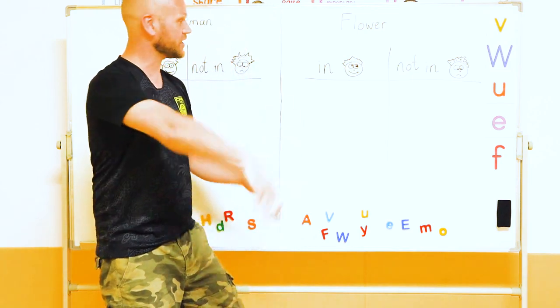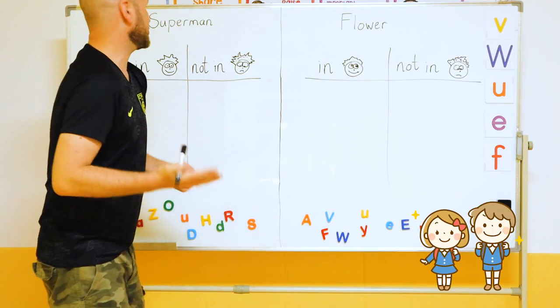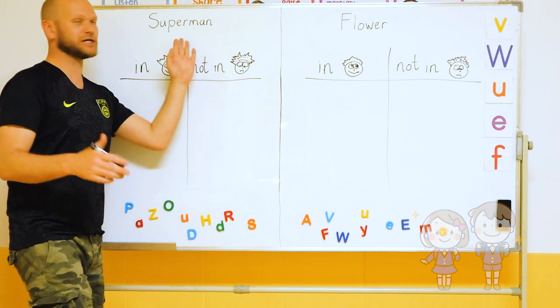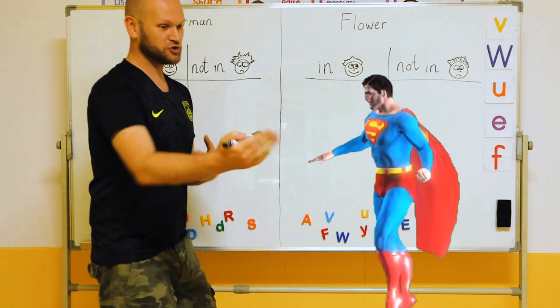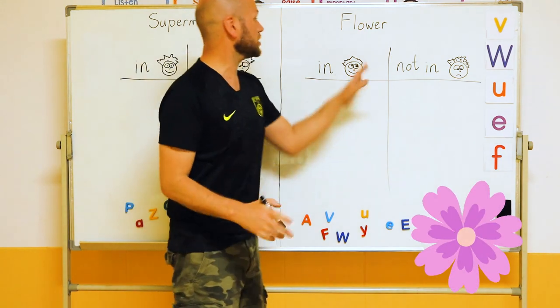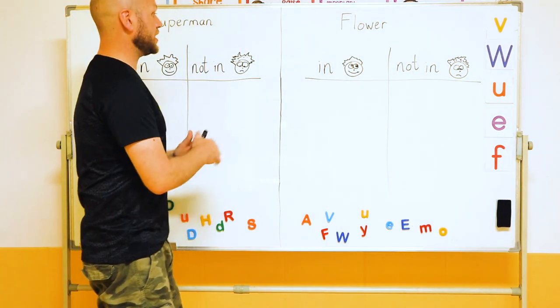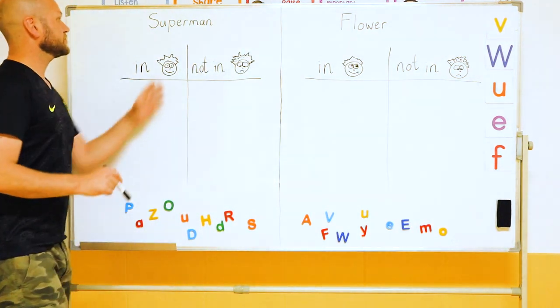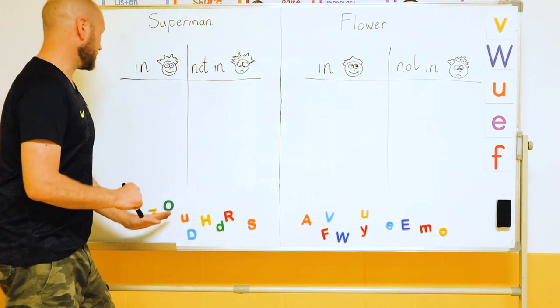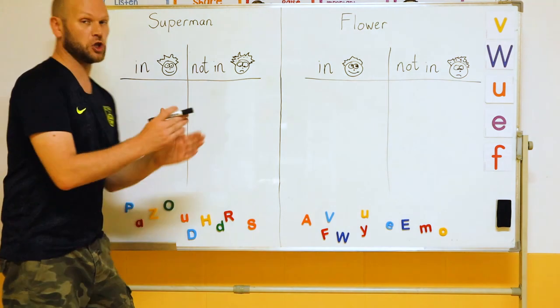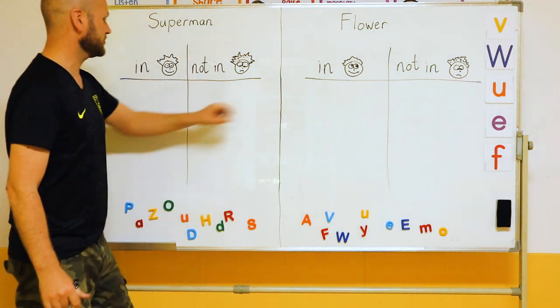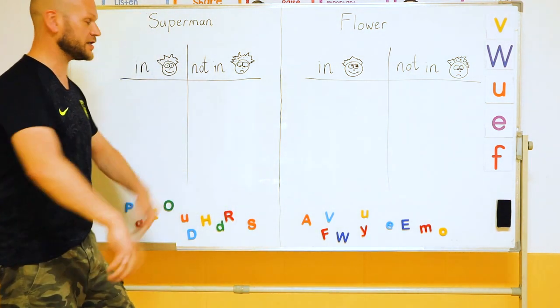Two students come up, ask their name. So a classic English boy's name in China, Superman. What's your name? It's Flower. So explain to the students, if the letter is in your name, it goes here. If it's not in your name, it goes here. Are you ready? Let's go. 3, 2, 1, GO!